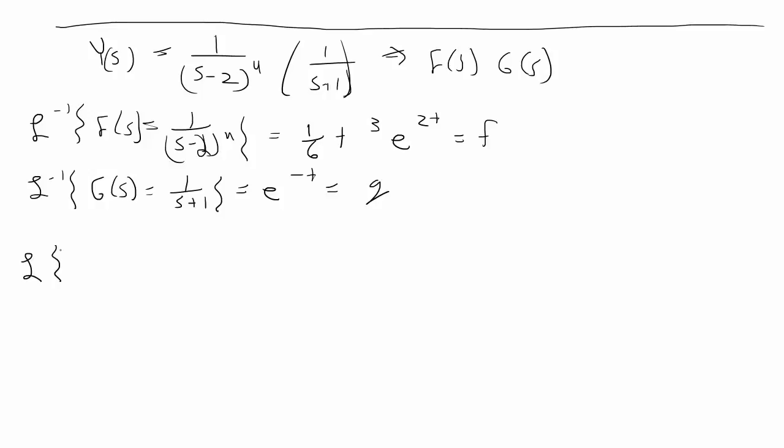So I'll rewrite the inverse Laplace transform of F(s)G(s) is equal to the convolution, which equals the integral from 0 to t of 1/6 u^3 e^(2u) e^(-(t-u)) du. So in this case I plugged in t minus u to what I call g. Alright, and then the next thing you have to do is just solve for the integral.